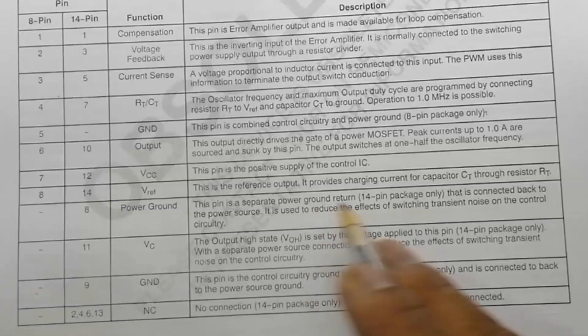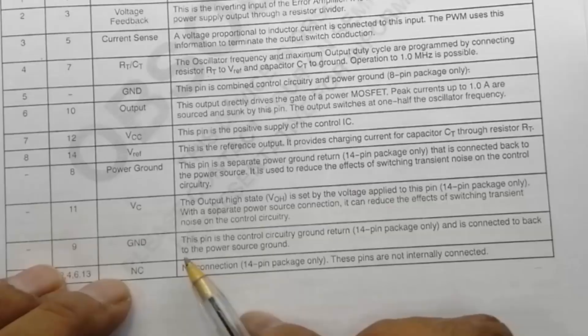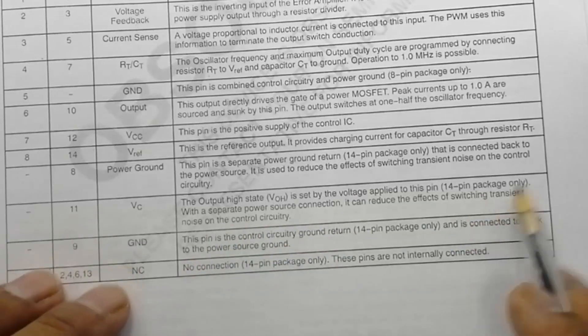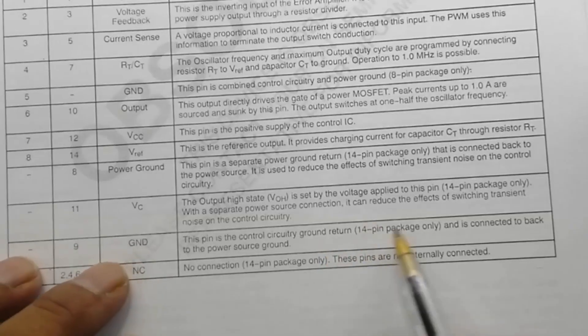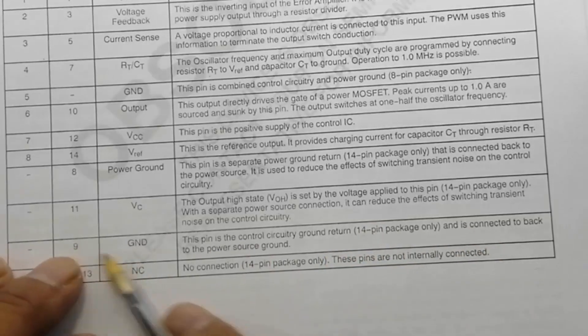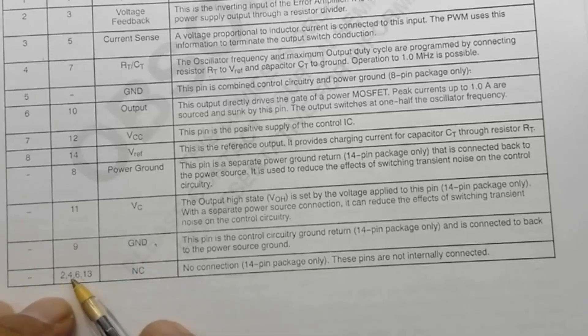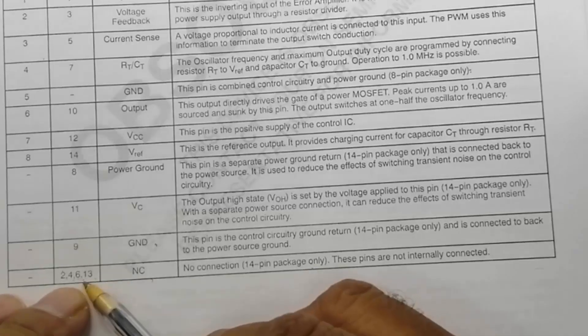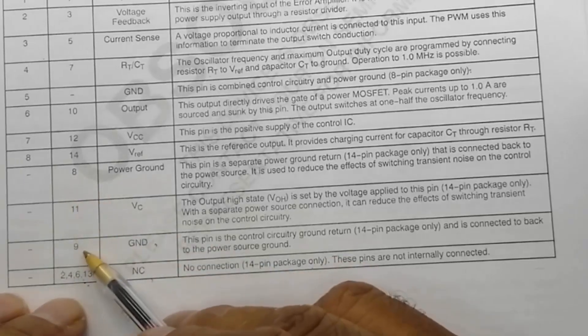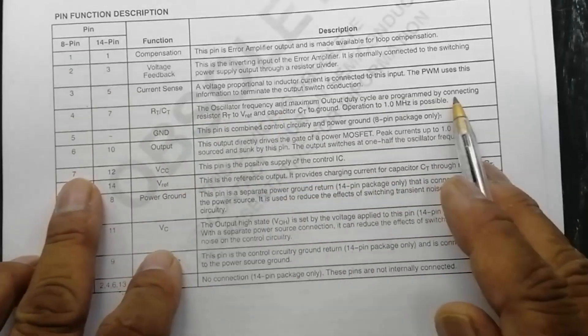Power ground for 14-pin, pin 11 ground. VC output, a high state of the MOSFET. It is for 14-pin only. Pin 9 ground, this pin is control circuitry. 14-pin package, it have an additional ground. 14, 2, 4, 6, 13 not connected in 14 package. Four pins are not connected. These 3 are additional, but these are the same. 8-pin have the same function.